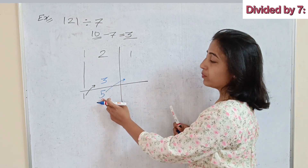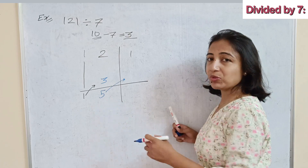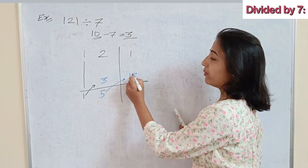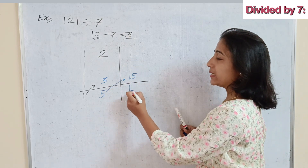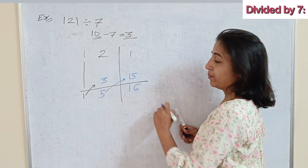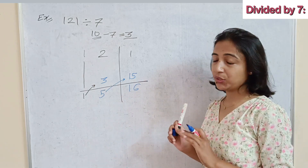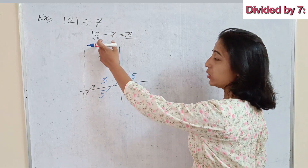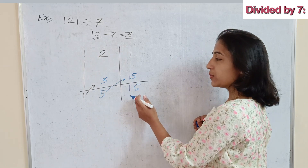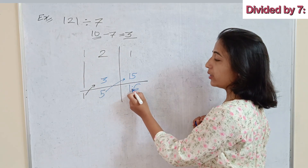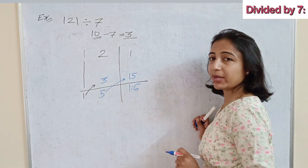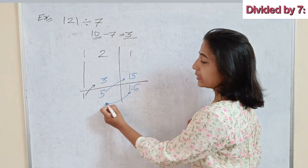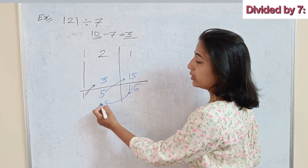3 times 5 is 15, and 15 plus 1 is 16. Is this our final answer? No, because the base number contains 10 — so we need a single digit on the right side. If it is not a single digit, we break that number and add the extra part to the next quotient portion.